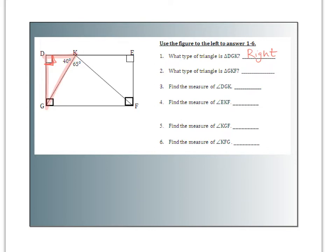Number 2: what type of triangle is triangle GKF? GKF is the blue triangle. One thing I notice is up at the top this is 65 degrees. The corner on the bottom left has to be less than 90 because the whole corner is 90 but we're cutting into it, so our part of the blue triangle is less than 90. Same thing on the other side — I think all three corners are less than 90. This is an acute triangle.